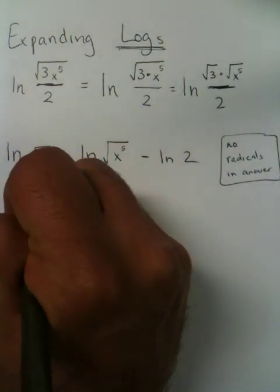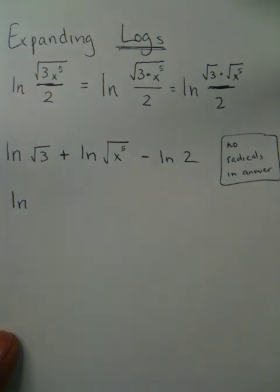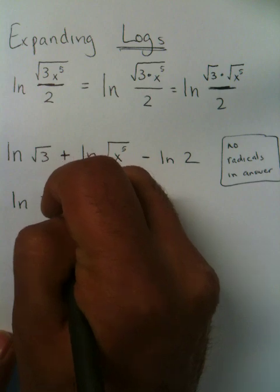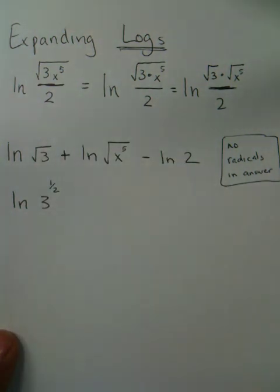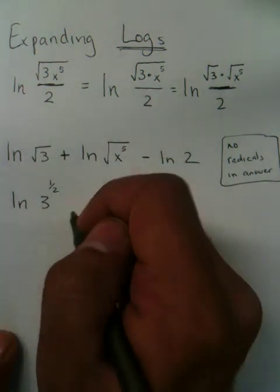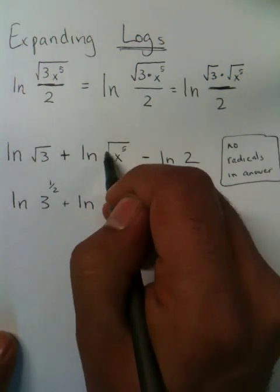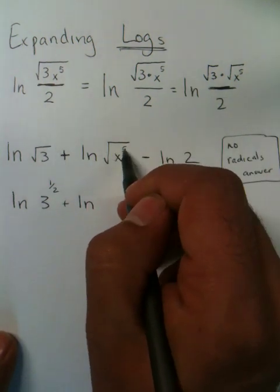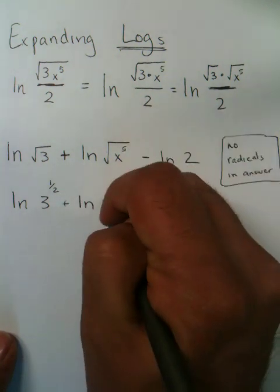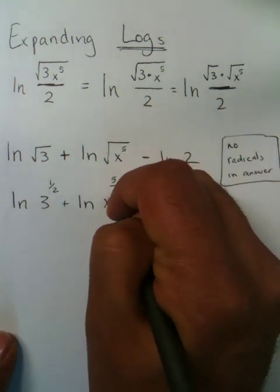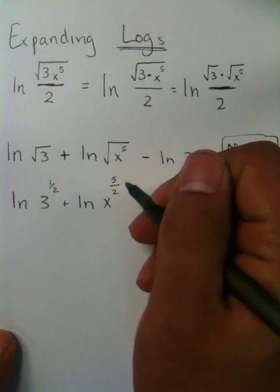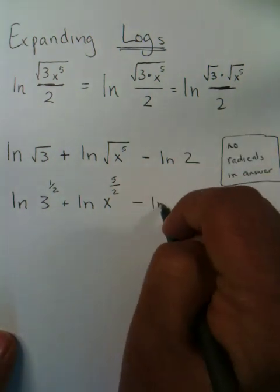A radical is an exponent, it's a fraction exponent. The one-half power is the same thing as a radical. The index of this radical is two. Since we have a power of five, what we're going to do is we're going to have five halves. There was no power attached to this two, so we leave it the way it is.